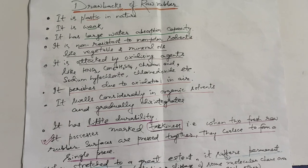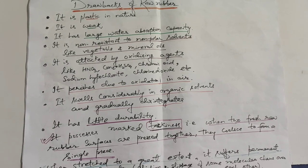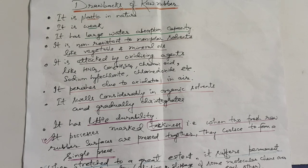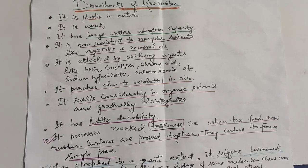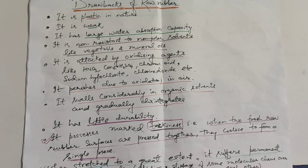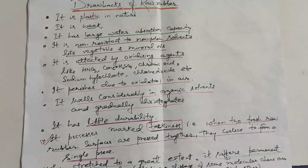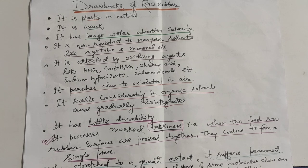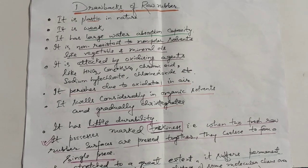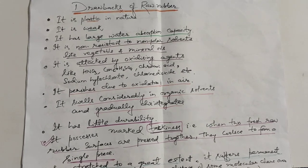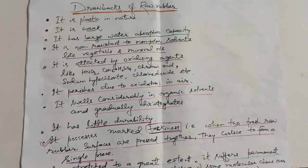Raw rubber is easily attacked by oxidizing agents like nitric acid, concentrated sulfuric acid, chromic acid, sodium hypochlorite, chlorine dioxide, etc. Due to oxidation in air, it perishes. It swells considerably in organic solvents and gradually disintegrates.